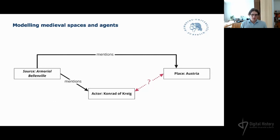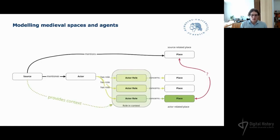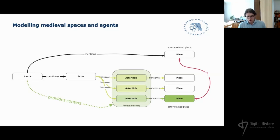Let's take a step back and try to make this relation between actor and place more explicit. Normally we would deal with three layers of a data model: the historical source or the assertion about a fact, the personal actor, and the place. To account for the complexity illustrated, we need to include an additional layer that describes the role this actor fulfills in a specific historical context. Each role — like being part of a retinue, being a vassal, being part of a military campaign, or being part of a tournament — explains their relation to one or more places, and is relevant during a specific time frame. Our historical source provides us with this context for the role.